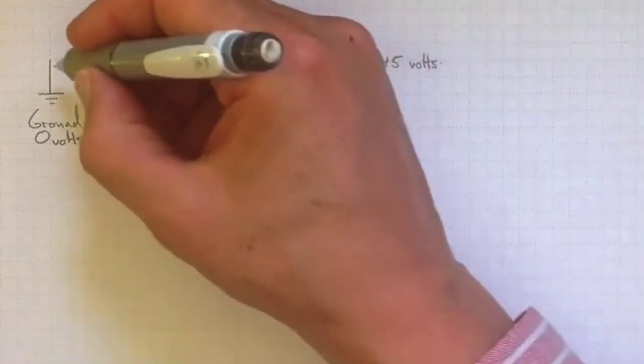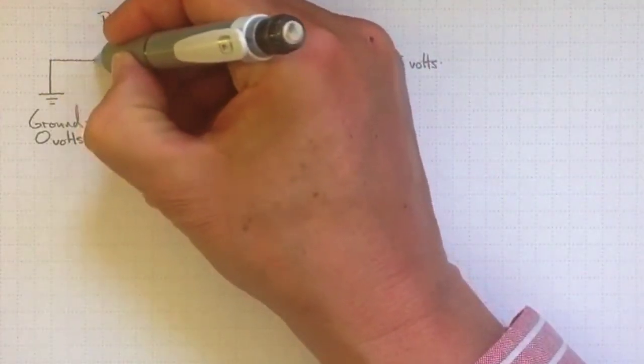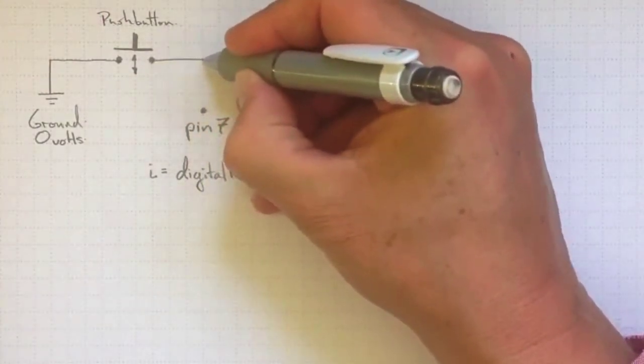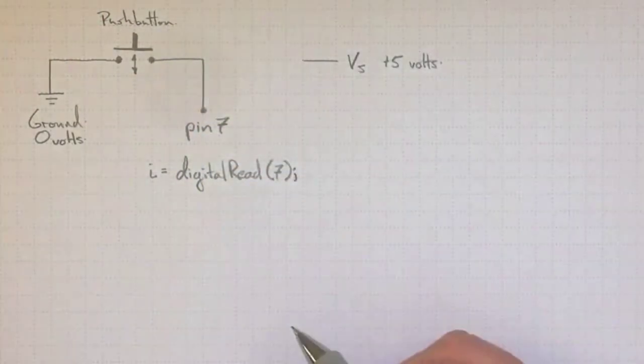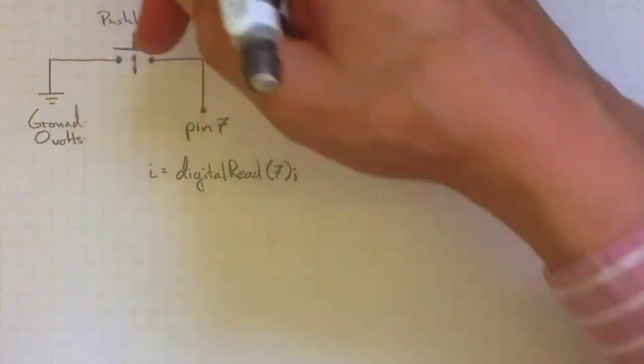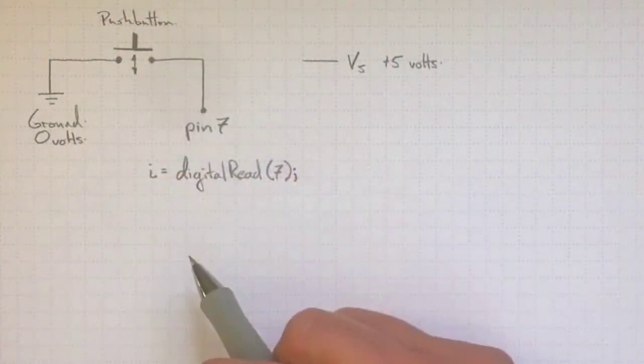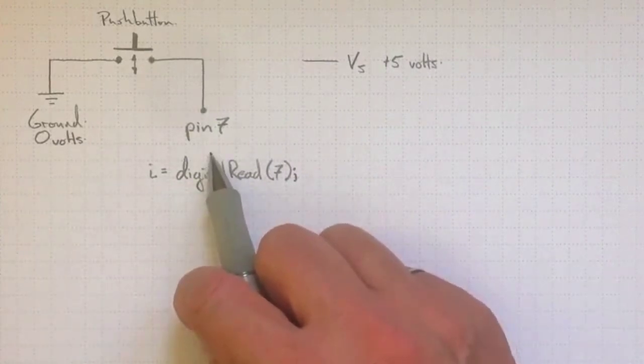Well, to get that to happen, I could connect one side of the push button to ground, and connect the other side of the push button to pin number 7. And then if I pushed the button, every time I pushed the button, pin 7 would be connected to ground, and I'd be at 0 volts on pin 7, so I could be sure that pin 7 was at 0 volts.